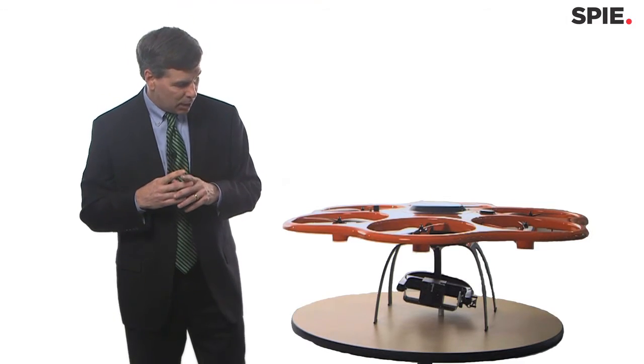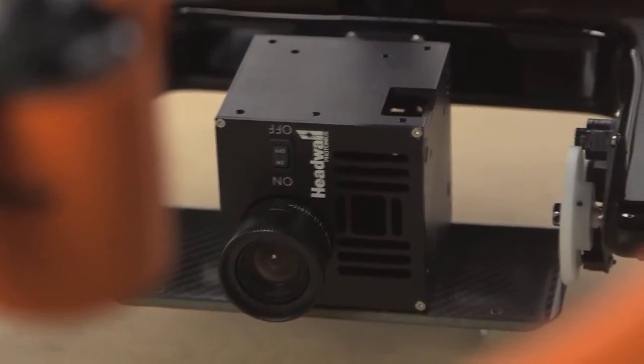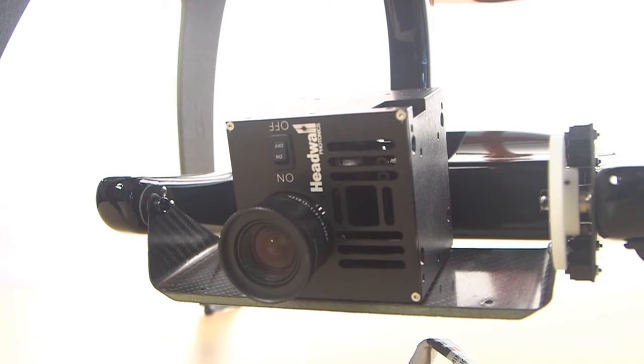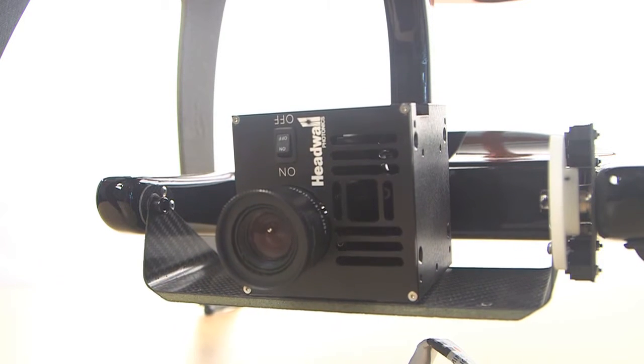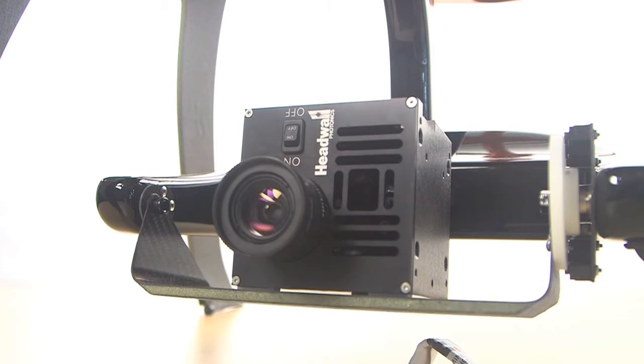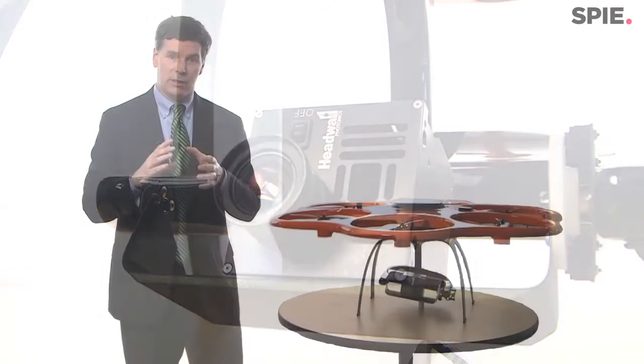If you notice on the bottom, at the gimbal, one of Headwall's flagship products is the nano hyperspect sensor. This is truly a very innovative product. As you can see within the gimbal, the nano hyperspect is mounted there. This is a true high-performance hyperspectral sensor.